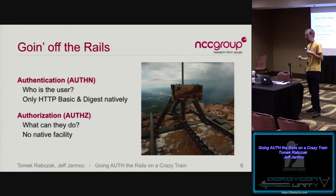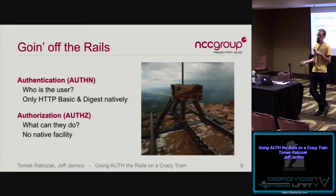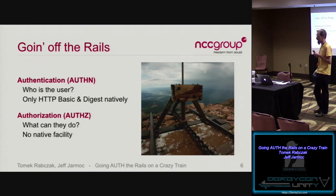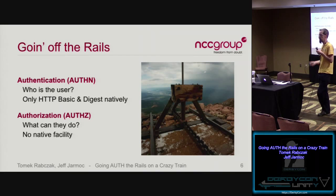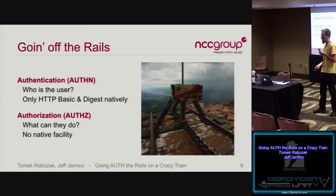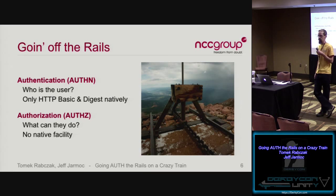Where Rails goes off the rails is authentication and authorization — there's really not a lot of native support for either. Authentication and authorization are two distinctly different things: authentication is focused on who the user is, just identifying them, while authorization is what permissions they're allowed. On the authentication front, all you get out of the box is HTTP basic auth and digest auth, which you probably don't want to use. On the authorization front, there's really nothing native.